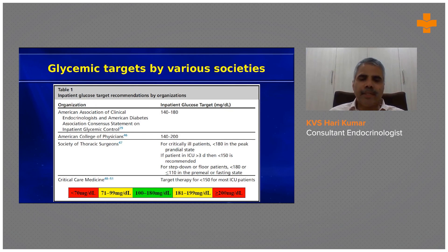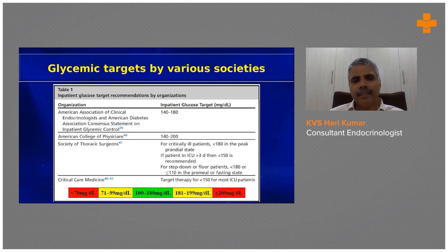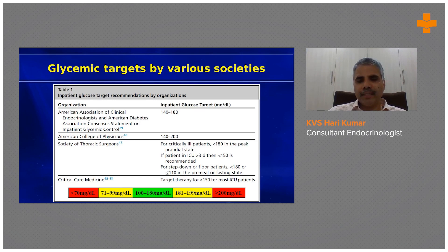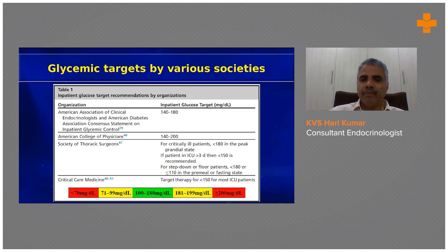When you look at a patient admitted in hospital, the ideal glucose control range — as given by most societies — is between 140 to 180 mg/dL. For critically ill patients, it may come down to around 110, but there is a higher risk of hypoglycemia at that level. The best possible inpatient target is between 100 to 180 mg/dL.